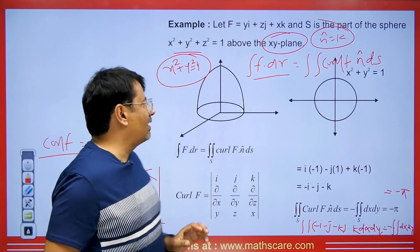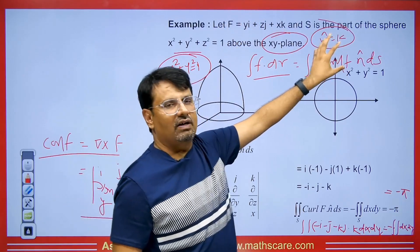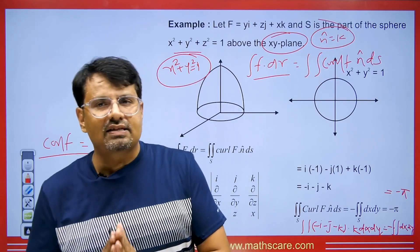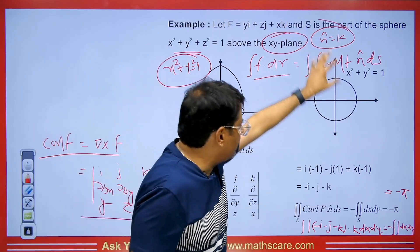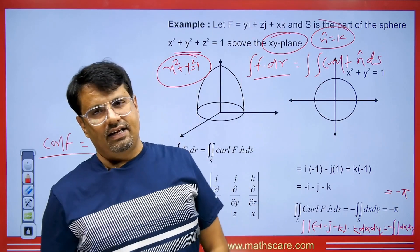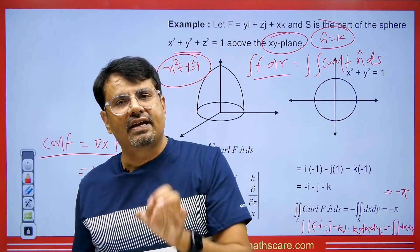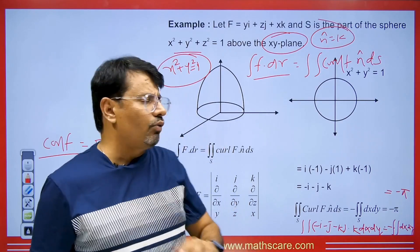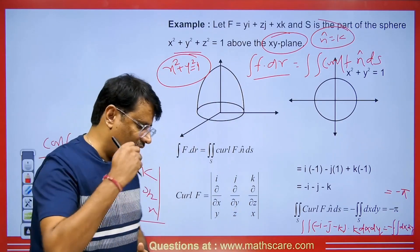Now if in the exam we are asked to verify Stokes theorem, we find the answer using both double integration and line integral. We just found -π using the surface integral. Now let's see whether we can also get -π using the line integral.